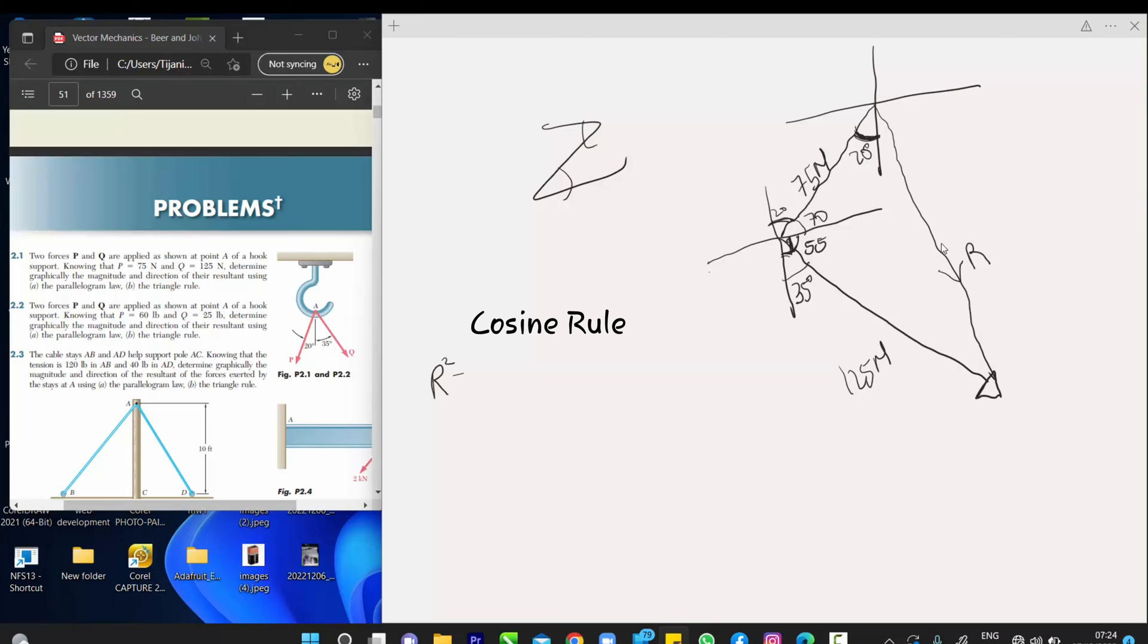Then, you come to apply R square is equals to P square plus Q square minus 2PQ dot cos R. So, our R square is unknown, and our P square is 75 newton, 75 newton plus Q square, which is 125 square minus 2, open bracket, 75.